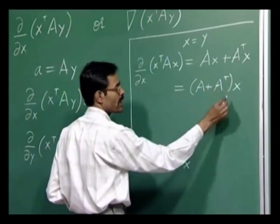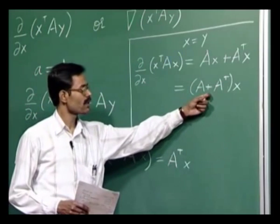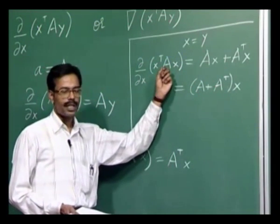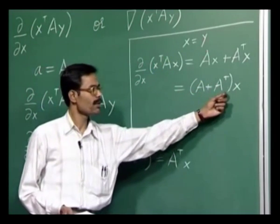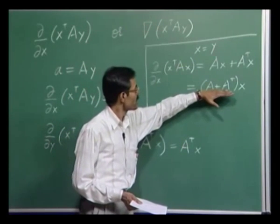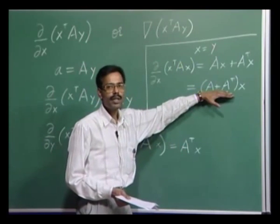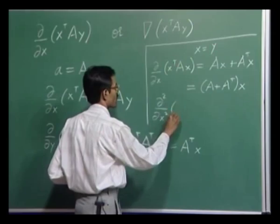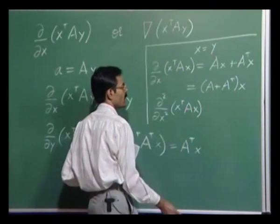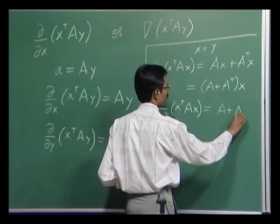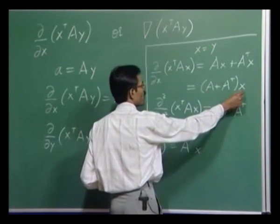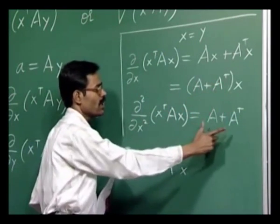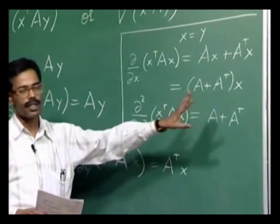Note that the matrix A + A-transpose is symmetric, irrespective of what A is. Typically, in this quadratic form — which we have encountered earlier — A is taken as symmetric. But even if originally A is not symmetric, the result will be symmetric anyway. Now, this gradient is a vector function. If we differentiate it, we get the Hessian of the original function — the second order derivative — which turns out to be A + A-transpose. A small change delta x produces (A + A-transpose) times delta x as the change in the gradient. In the case of symmetric A, this will be 2A.